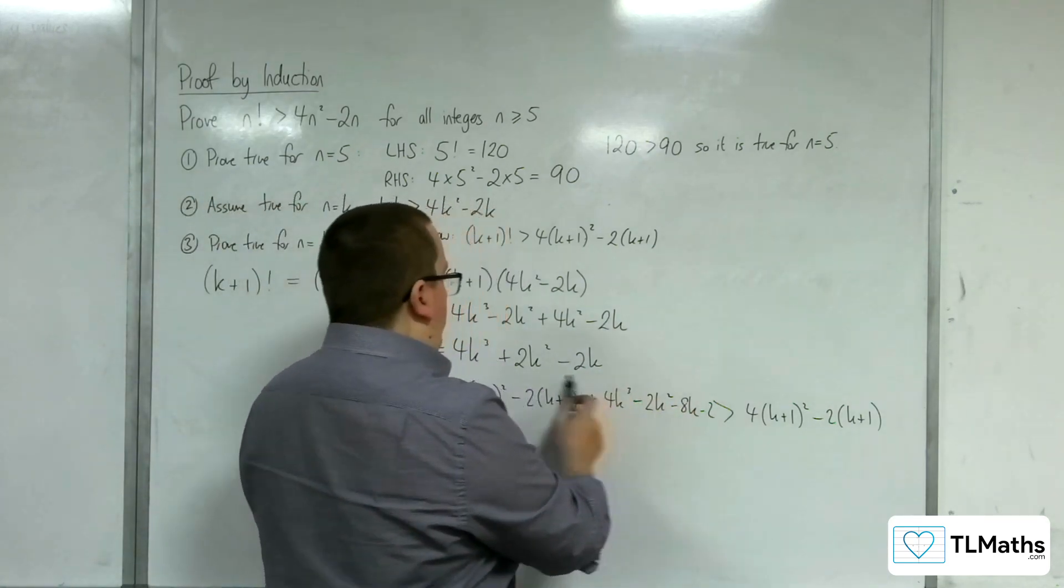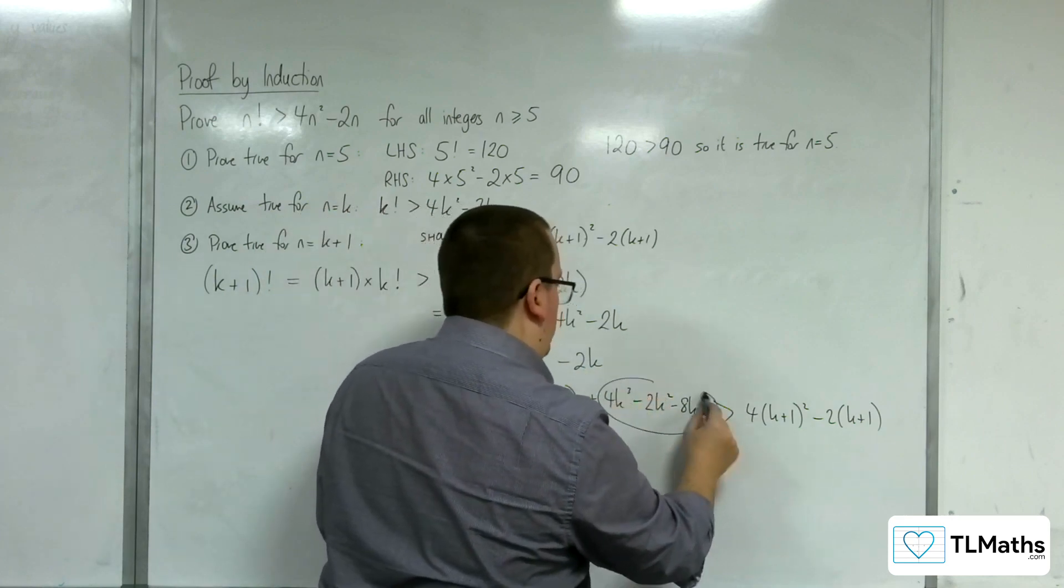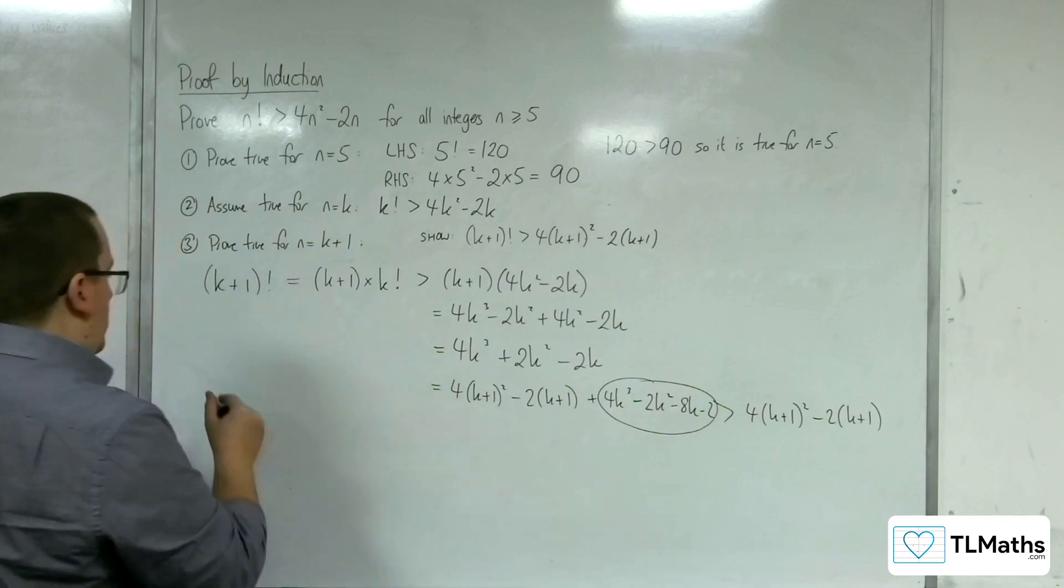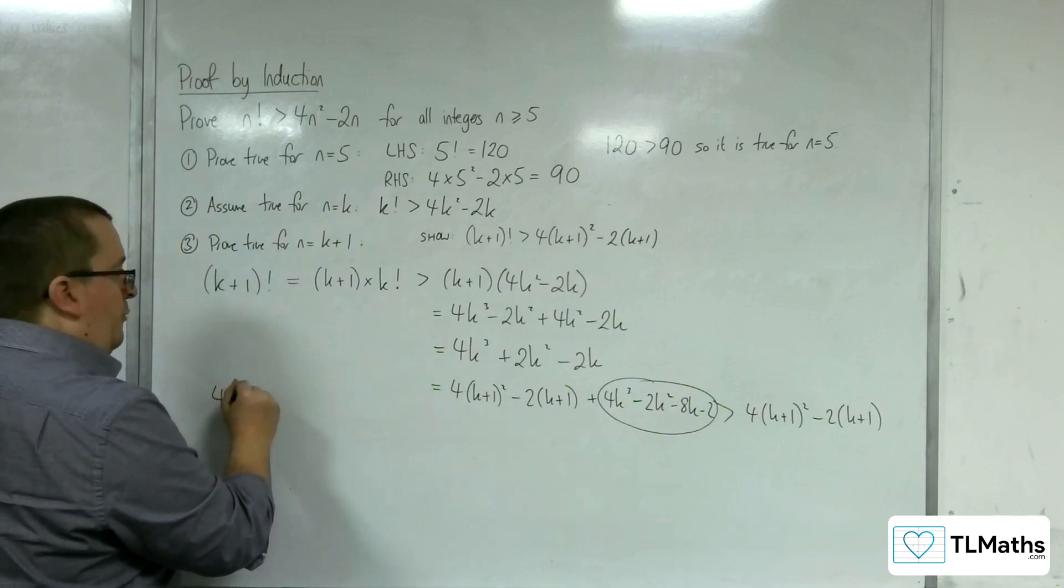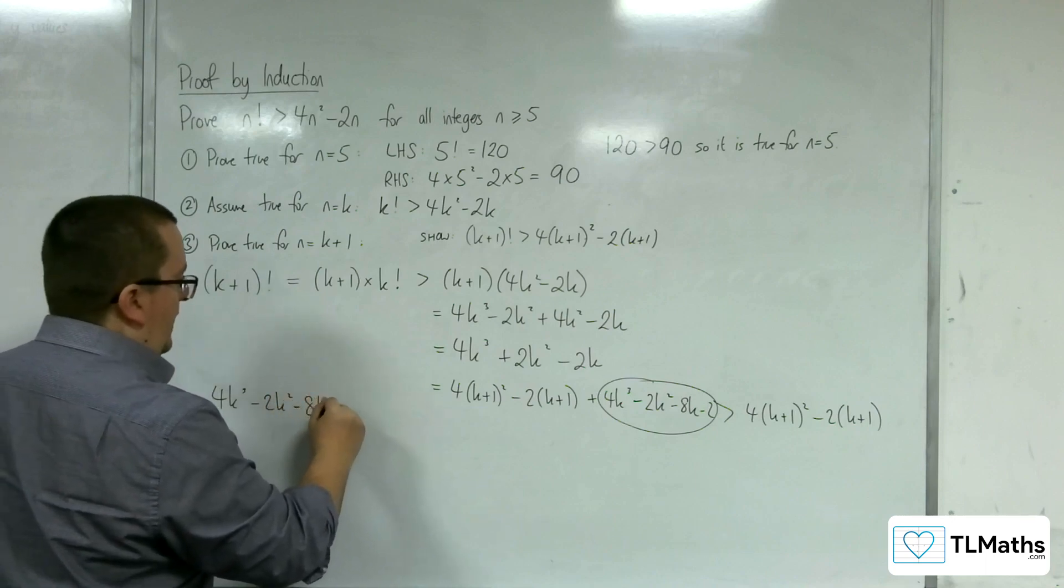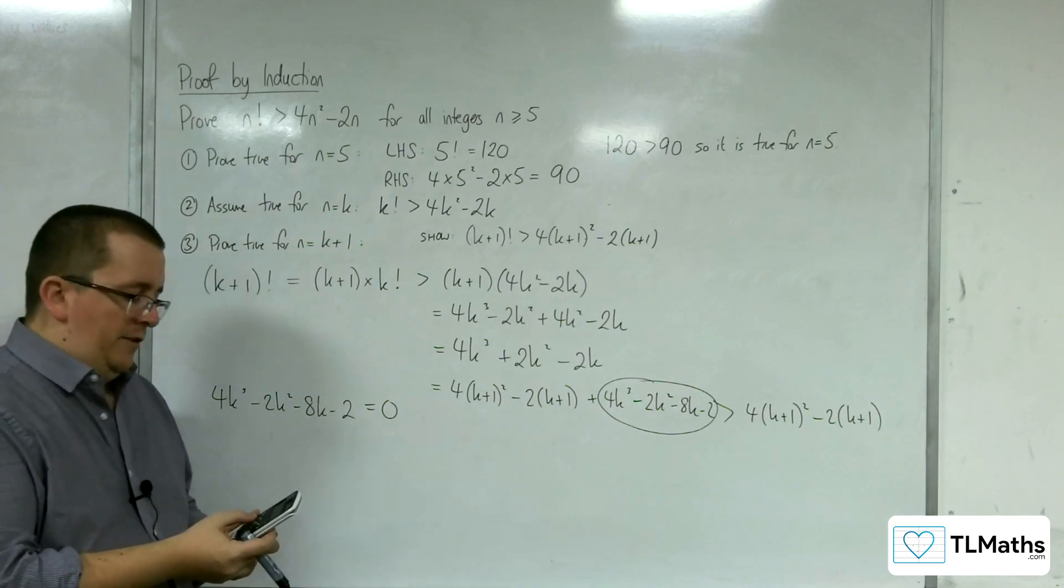So this should be the same as this. So my job now is to show that that is greater than 0. So if I look at 4k cubed take away 2k squared take away 8k minus 2, and I set it equal to 0, I'm going to plug that into my calculator.